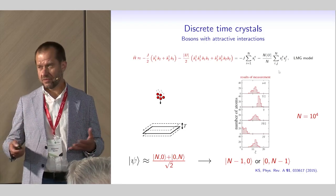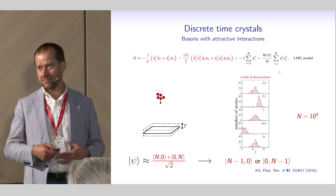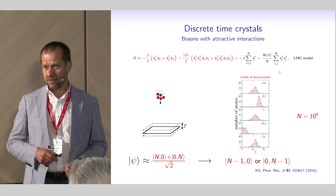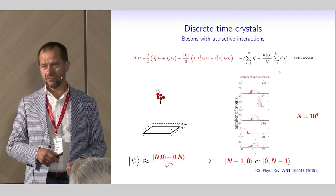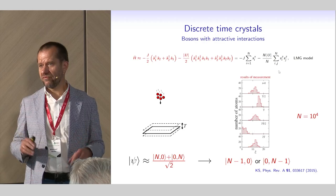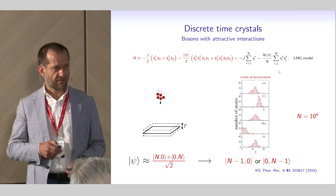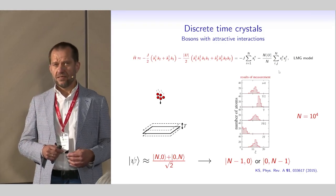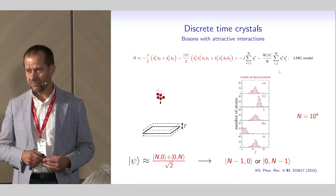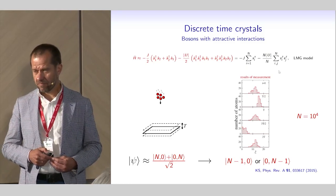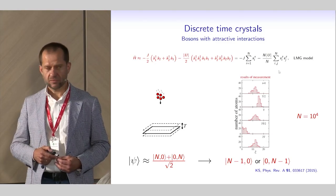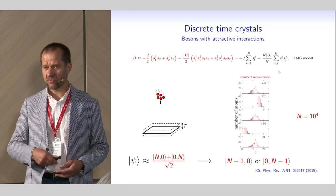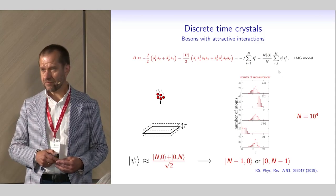This Floquet state evolves with the driving period, but it is a Schrödinger-cat-like state, so it is sufficient to measure the position of one atom — the state collapses to one of the two states. Then the evolution starts with a period twice longer than the driving period, new periodic motion appears, and new crystalline structure in time turns up. Within the rotating wave approximation, the lifetime of this symmetry-broken state increases exponentially with the number of atoms.